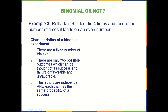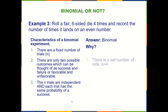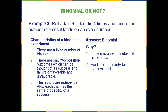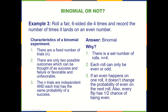Example three: roll a fair six-sided die four times and record the number of times it lands on an even number. Binomial or not? Yes, it is. We have a fixed n equals four. Each roll can only be even or odd, so we can boil that down to even being a success and odd being a failure. If an even happens on one roll, it doesn't change the probability of even happening on the next roll. Also, we have a 0.5, or one-half, probability — a 50-50 chance of being even on every single roll.